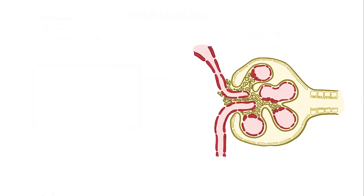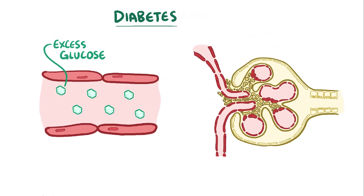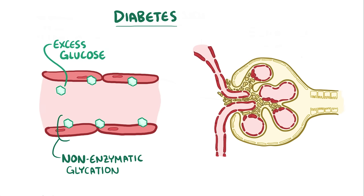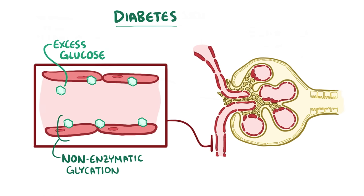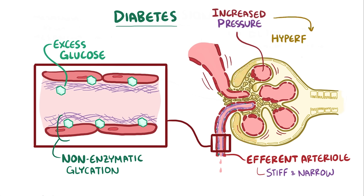The most common cause of chronic kidney disease is diabetes. In this situation, excess glucose in the blood starts sticking to proteins, a process called non-enzymatic glycation because no enzymes are involved. This process of glycation particularly affects the efferent arteriole and causes it to get stiff and more narrow, a process called hyaline arteriosclerosis. This creates an obstruction that makes it difficult for blood to leave the glomerulus, and increases pressure within the glomerulus which leads to hyperfiltration, essentially pushing more fluid through.